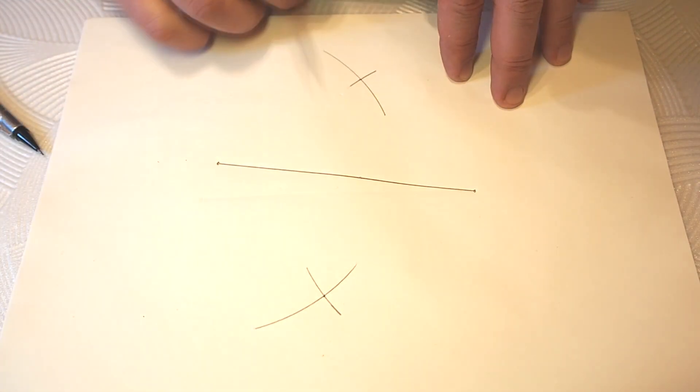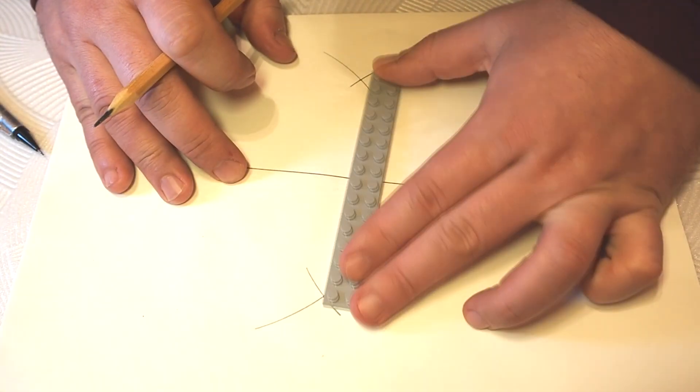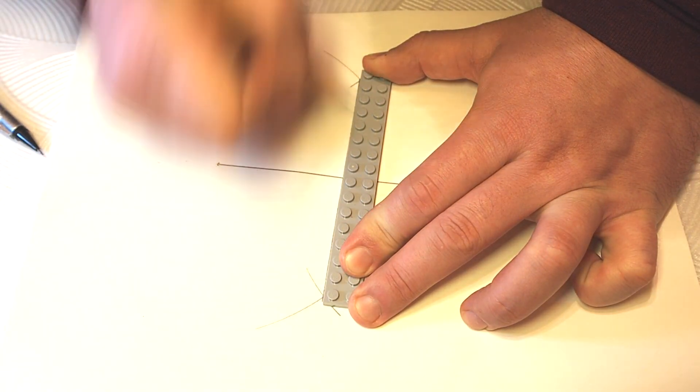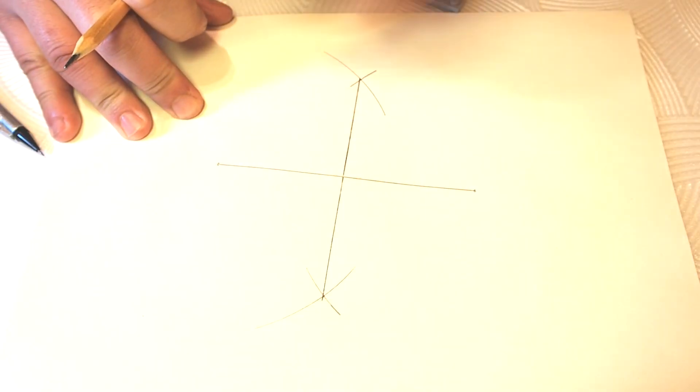Now we need to connect those points with another straight line. As a result, we have two perpendicular lines forming the right angle of 90 degrees.